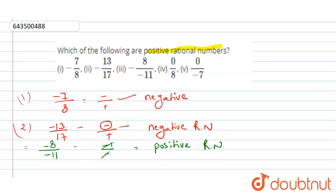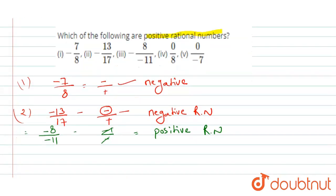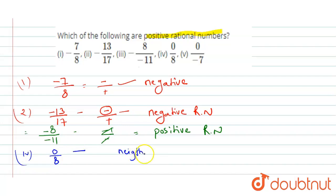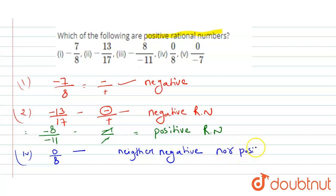The fourth rational number is 0 upon 8. Because the numerator is 0, this is neither negative nor positive.